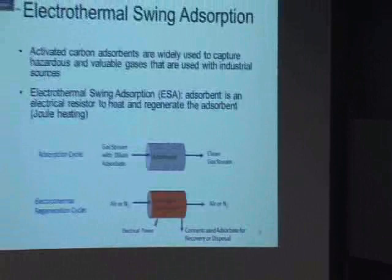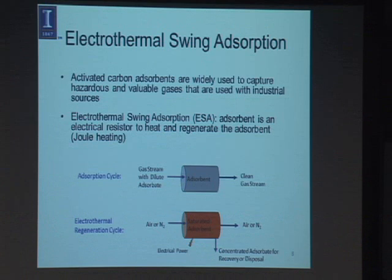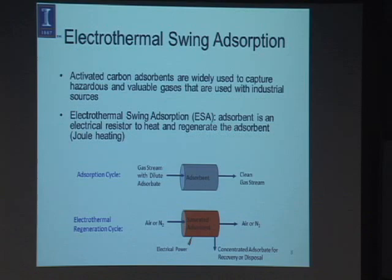Electrothermal swing adsorption is pretty neat. We have carbons that are conductive — actually semiconductors. You put a potential difference across the length of the carbon and heat it up with Joule heating, controlling the temperature very carefully, easily to within a degree. You adsorb the organic material from the gas stream, then regenerate the activated carbon very quickly by applying electrical potential, heating it to about 150–180°C. It desorbs within about three minutes. You get this very concentrated gas stream, and the gas flow rate during regeneration is about 1% of that during adsorption.